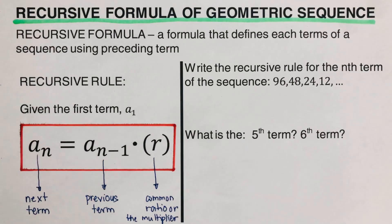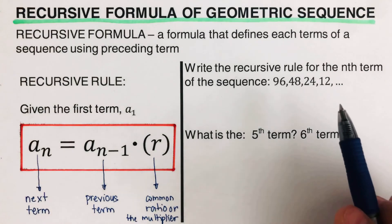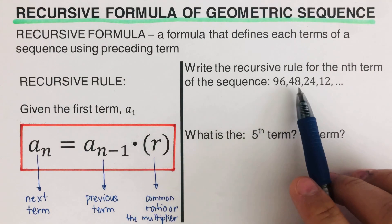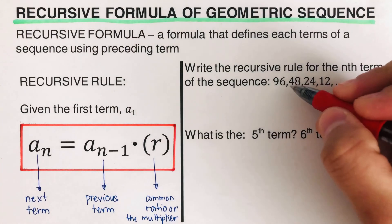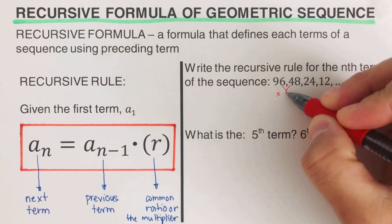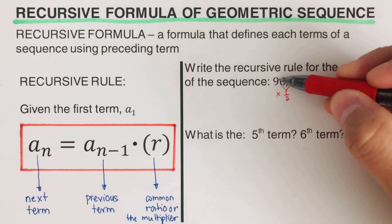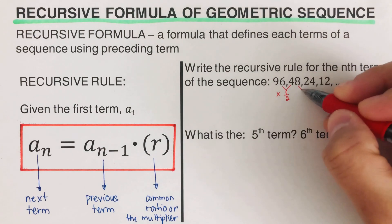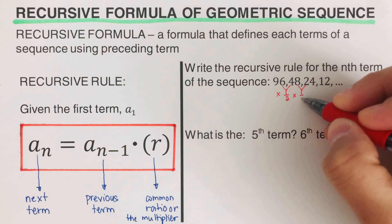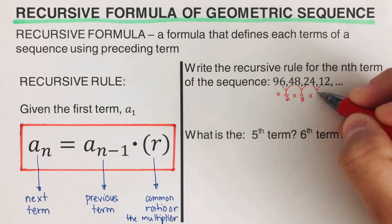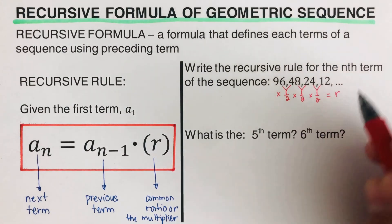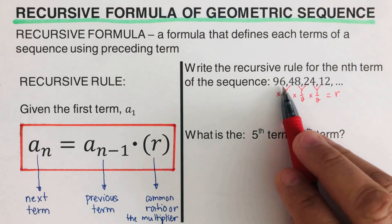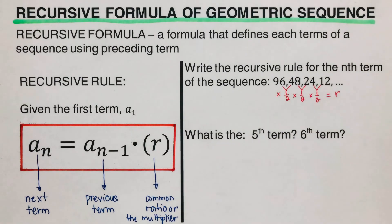Let's have some examples. Write the recursive rule for the nth term of the sequence: 96, 48, 24, 12. Just by looking at this sequence, we can tell it is multiplied by one-half each time. 96 times one-half is 48, 48 times one-half is 24, and 24 times one-half is 12. So one-half is our multiplier — the value we multiply each time to get the next term.